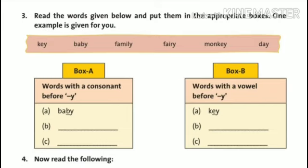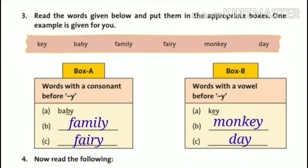Family. Here, L is your consonant. So, we put family in box A. Then, fairy. R is a consonant. So, write fairy in the box A. Then, monkey. There is a E vowel before Y. So, we put monkey in box B. Day. Here, A is your vowel. So, we put day in box B.